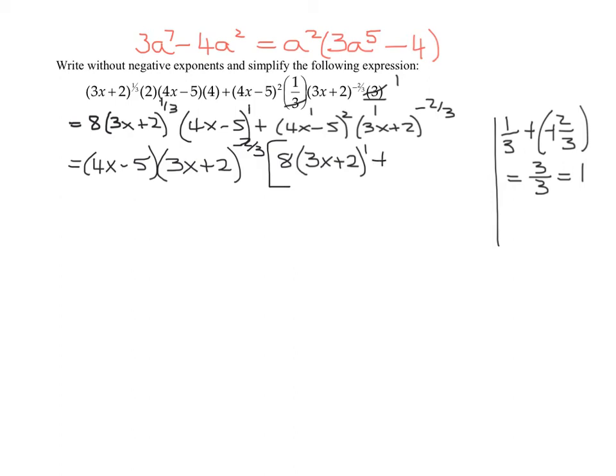Now we come to the easier part. If I factor a three X plus two to the negative two thirds out, that total term is factored out. And I'm going to factor four X minus five out of a four X minus five squared. It's just going to leave four X minus five to the first power. And so that is the hard part of this question.